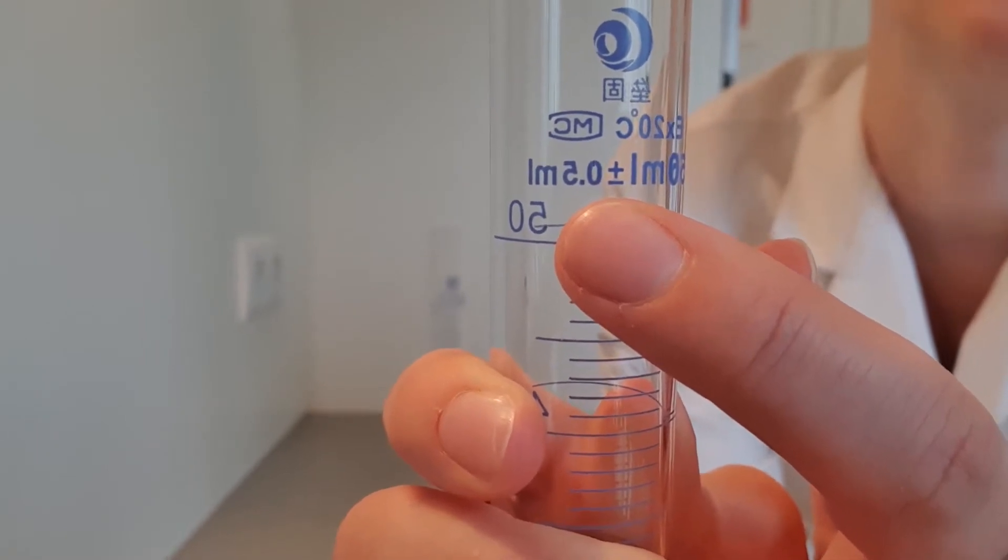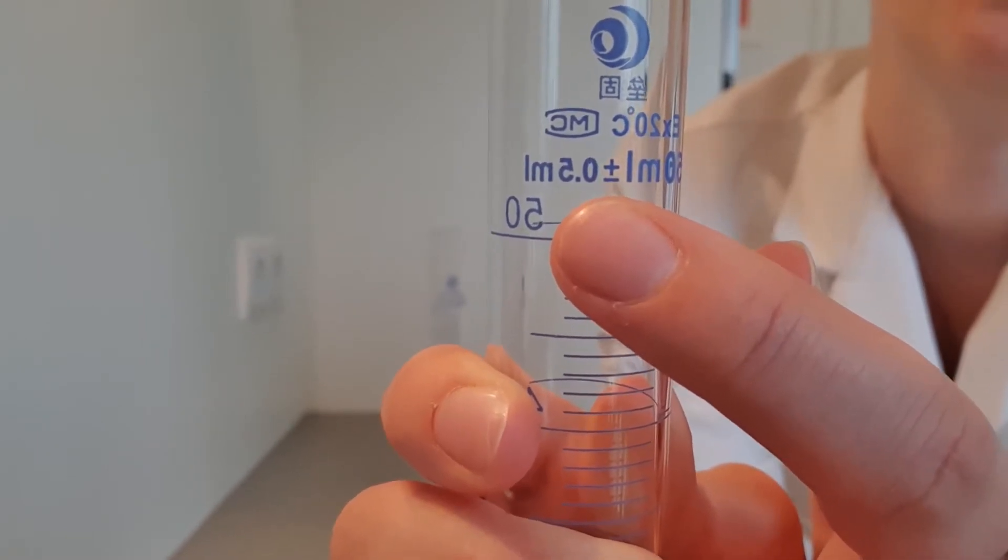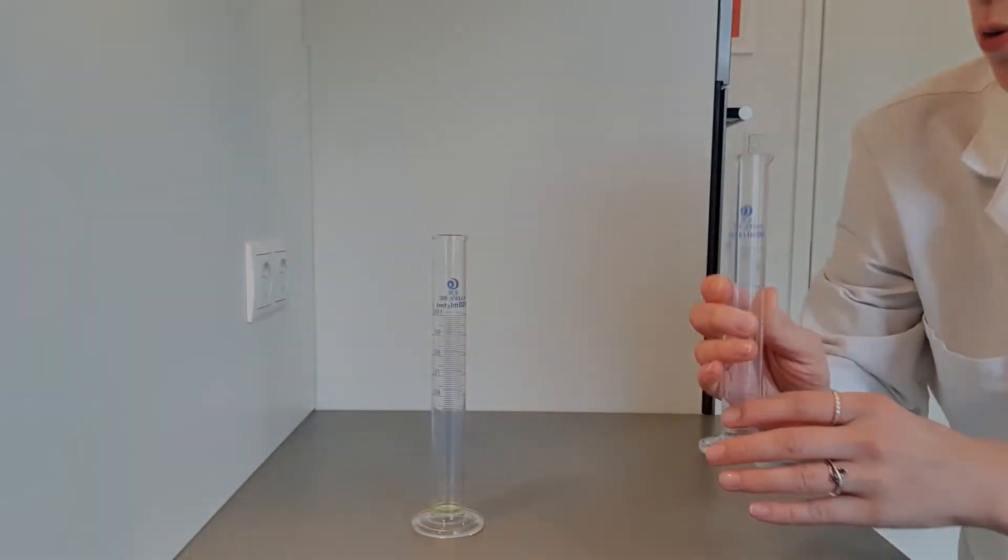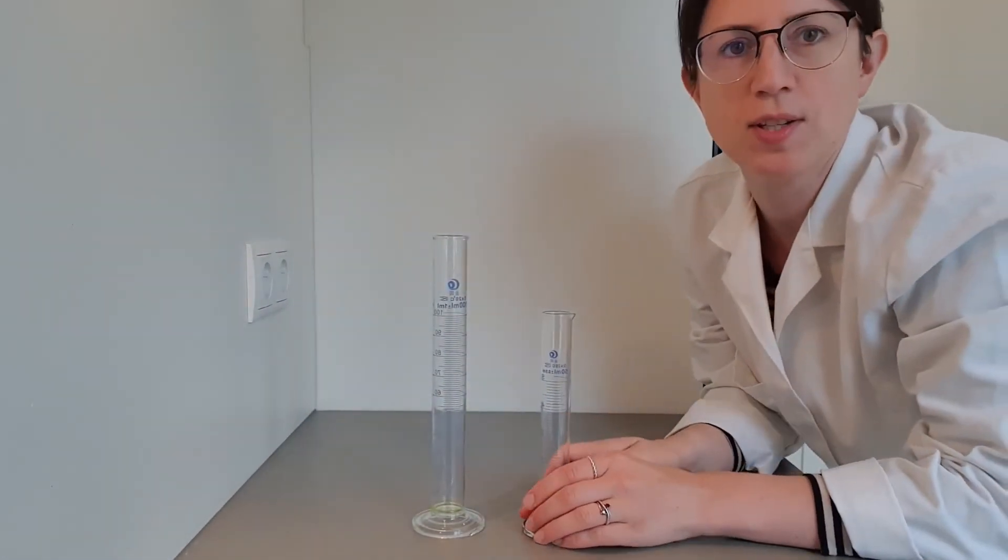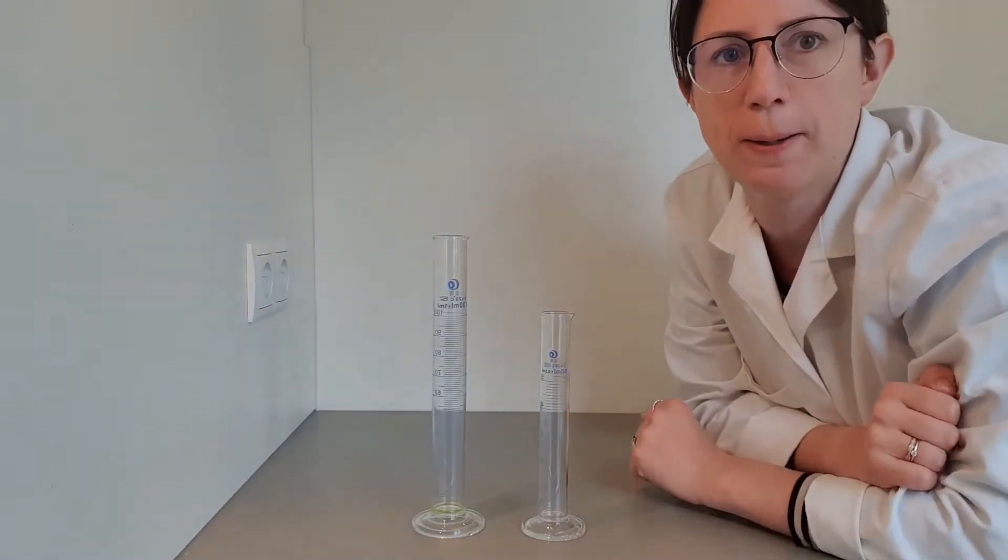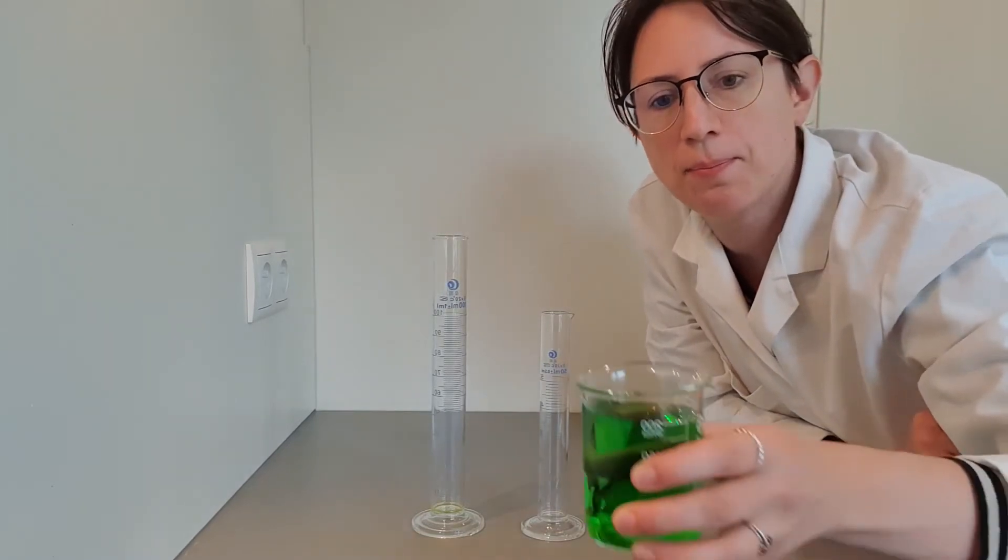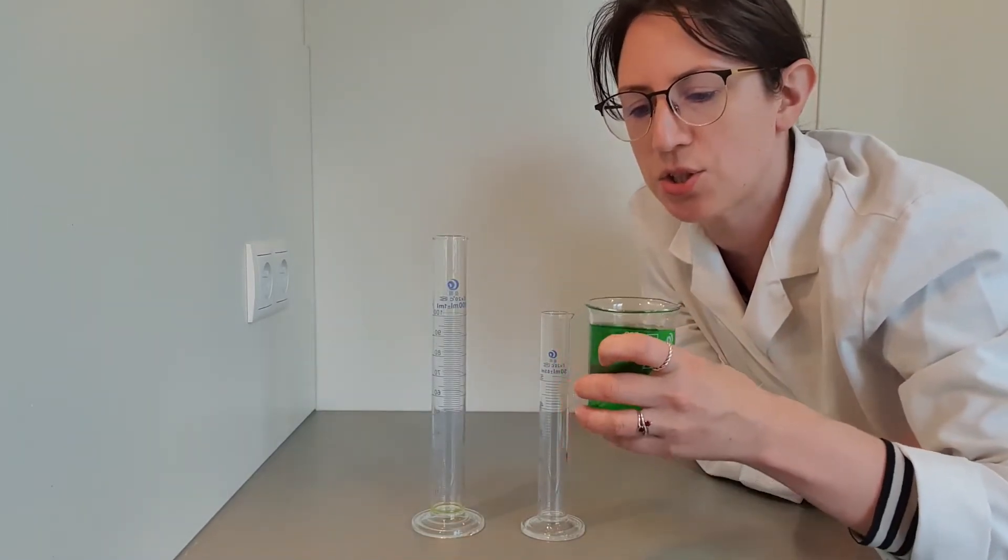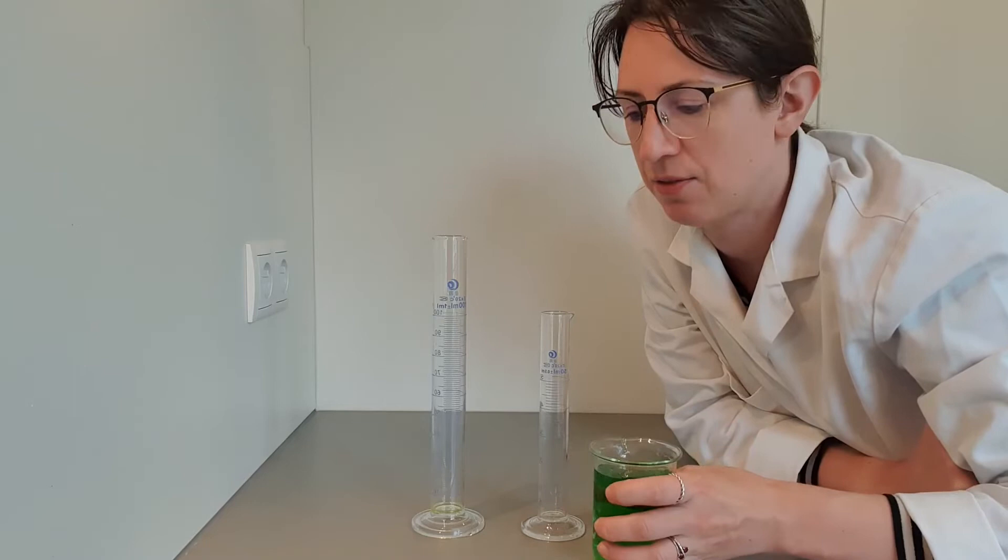So how do we use a measuring cylinder to put the correct volume in? I've got some green water here, just so you can see the clarity of the water a little bit easier.